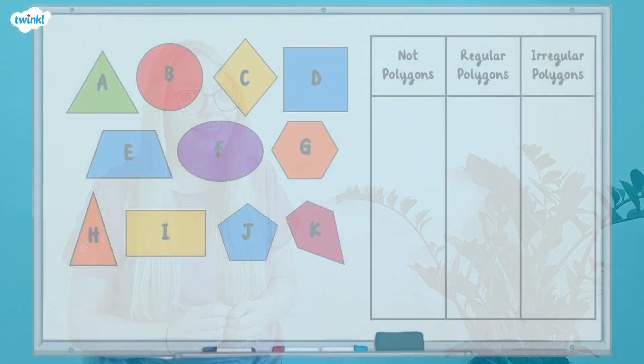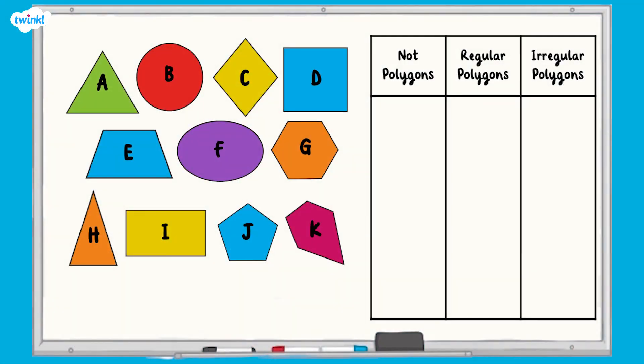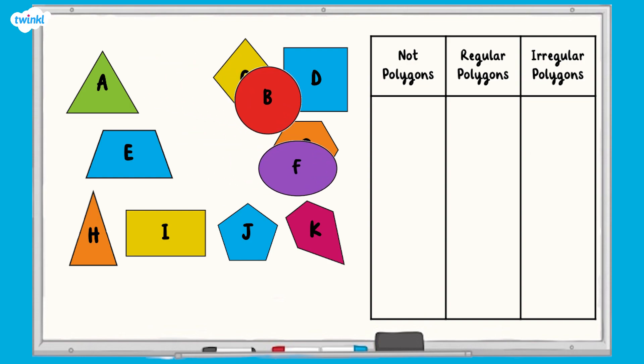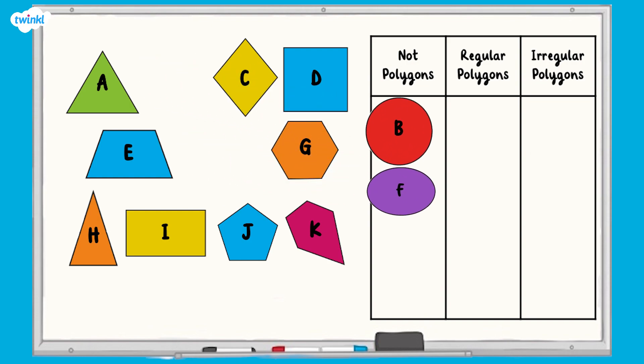We need to identify which of the shapes are polygons. Can you identify which of these shapes are not polygons? Shape B, a circle, and shape F, an oval, are not polygons because they do not have straight sides.